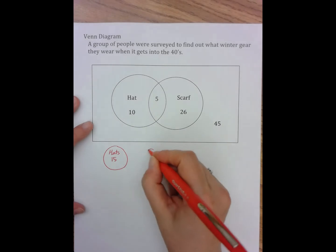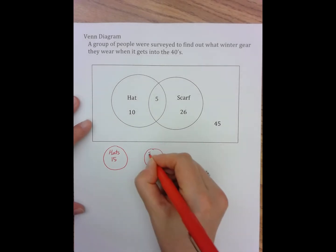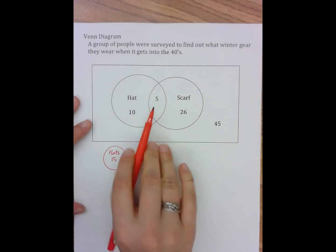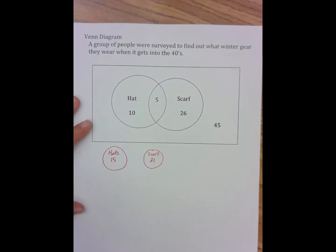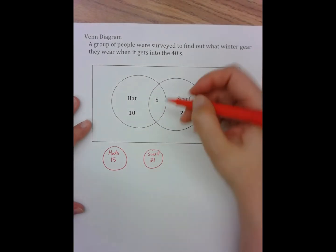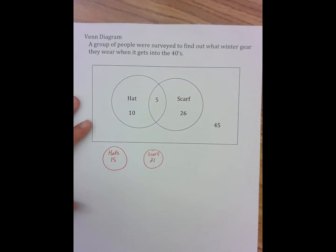And on this side, we have a circle where it talks about scarves. And it actually turns out that 31 people said yes to wearing a scarf. So what does this 5 in the middle stand for?